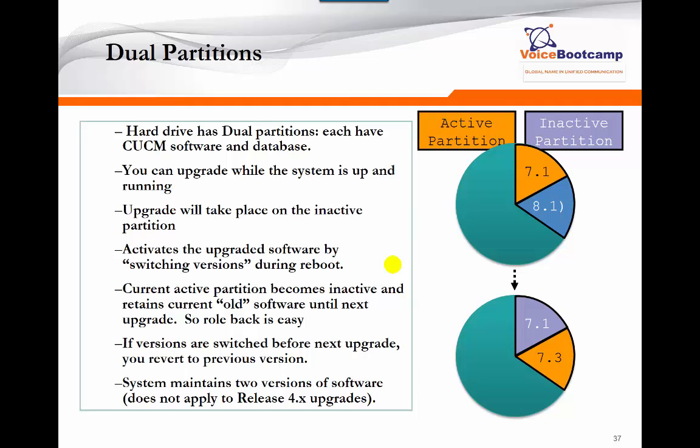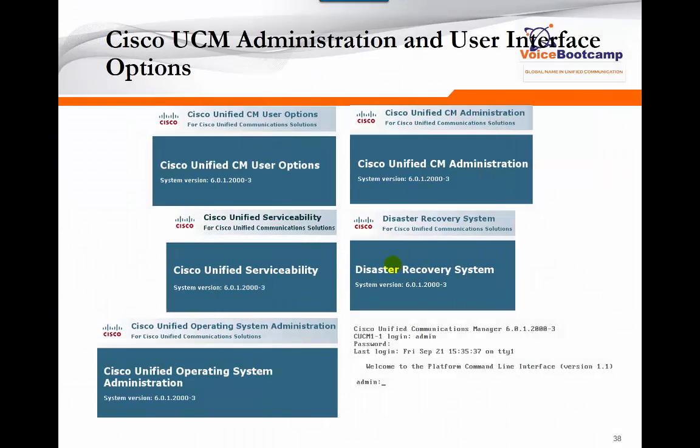Once installation is done, the system takes your hard drive (minimum 74 GB) and creates two partitions: Partition A and Partition B. Partition A is where Call Manager is first installed and becomes the active partition. When you later upgrade, the system copies the database from Partition A to Partition B and upgrades Partition B first, leaving Partition A intact. After the upgrade, you go to OS Administration, select 'switch version,' and reboot — Partition B becomes active and A becomes inactive. This means Call Manager always retains a previous copy, allowing rollback at any time.